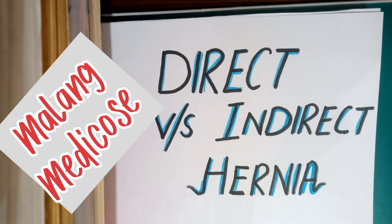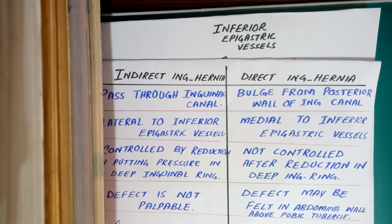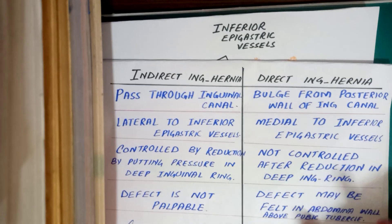There are different types of hernia depending on the location, like umbilical hernia, paraumbilical hernia, hiatal hernia, femoral hernia, and direct and indirect inguinal hernia. Today our topic is direct and indirect inguinal hernia. I have already drawn a diagram for you.